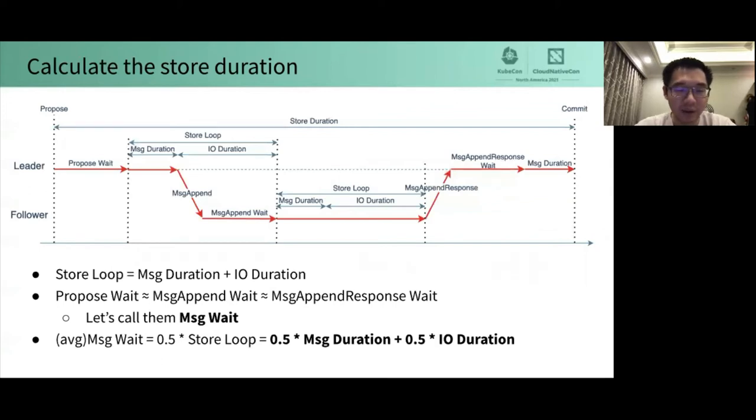This is a sequence diagram of store duration under normal conditions. That is equal to the sum of all paths on the red line. Store loop is the processing time of one round of store thread. It's equal to message duration plus IO duration. Propose wait, message append wait, and message append response wait are all the time the message waits for the store threads to process. According to the aforementioned assumptions, as the messages arrive uniformly, and they will be processed in the next round, their average waiting time is about half of the store loop. That is 0.5 message duration plus 0.5 IO duration.